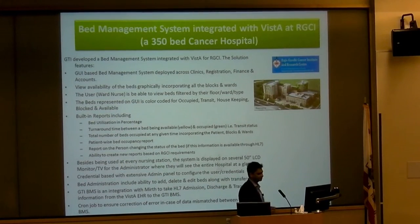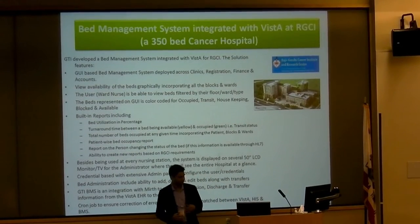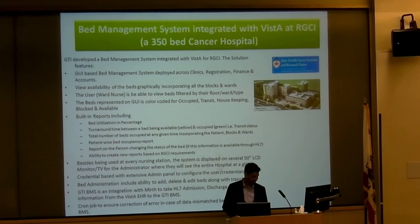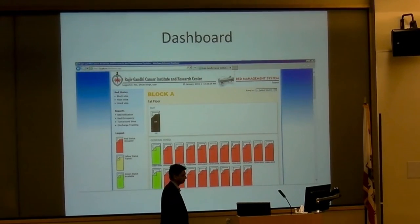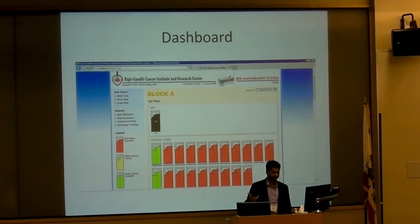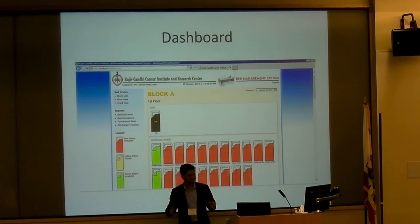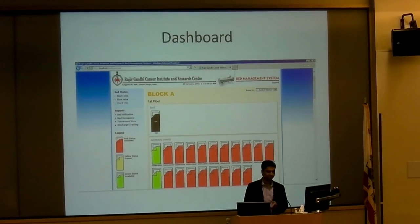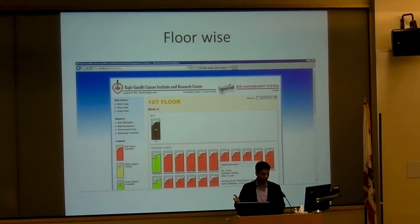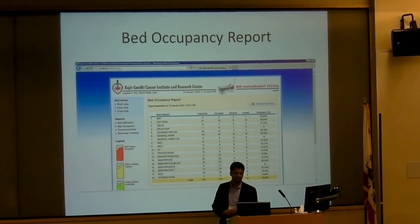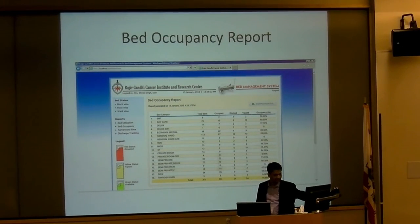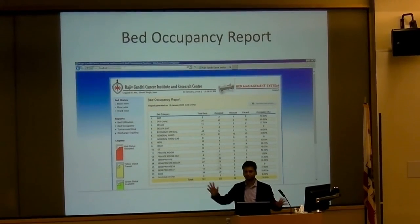They have put up huge 50-inch monitors where the entire bed status can be seen in one place. You have a block view, a floor view, and other layouts. Red, yellow, and green indicate bed statuses. When you mouse over a bed, it shows patient information — CR number, name, age, sex, attending doctor, and date of admission — all coming from Vista. You have an occupancy report for every bed category: total beds, occupied, blocked, vacant, and percentage of occupancy.